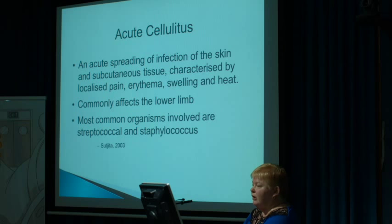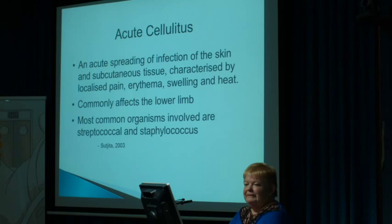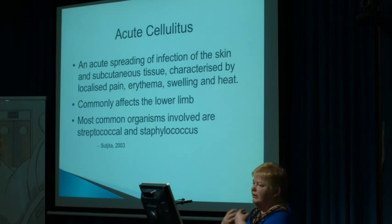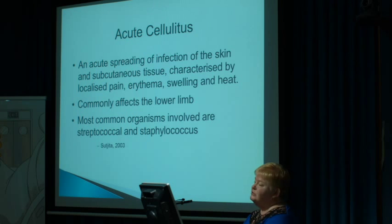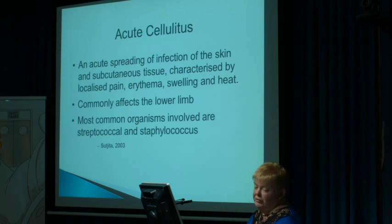I'm going to talk about cellulitis, because acute and chronic cellulitis is something I see regularly in casualty — at least five to six cases a week. It is acute spreading infection of the skin and subcutaneous tissue, characterised by pain, erythema, swelling, and heat. It commonly only affects the lower limb — you very rarely see cellulitis of the arms. The most common organism is either strep or staph. Streps can be very virulent and cause a lot more damage.